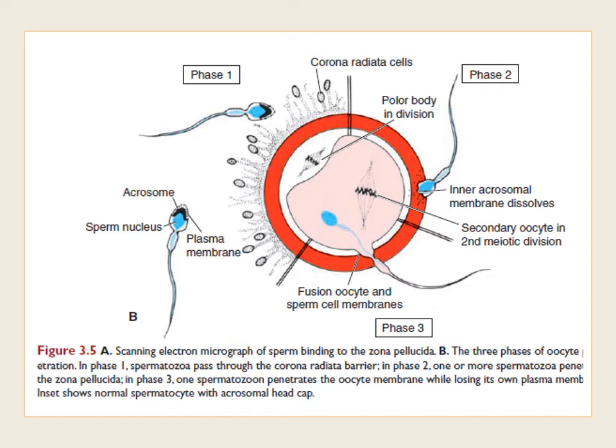Phase 3 is the fusion of the oocyte and sperm cell membranes. The initial adhesion of sperm to the oocyte is mediated in part by the interaction of integrins on the oocyte and their ligands. After adhesion, the plasma membranes of the sperm and egg fuse. Because the plasma membrane covering the acrosomal head cap disappears during the acrosome reaction, actual fusion is accomplished between the oocyte membrane and the membrane covering the posterior portion of the sperm head. In humans, both the head and the tail of the spermatozoon enter the cytoplasm of the oocyte.